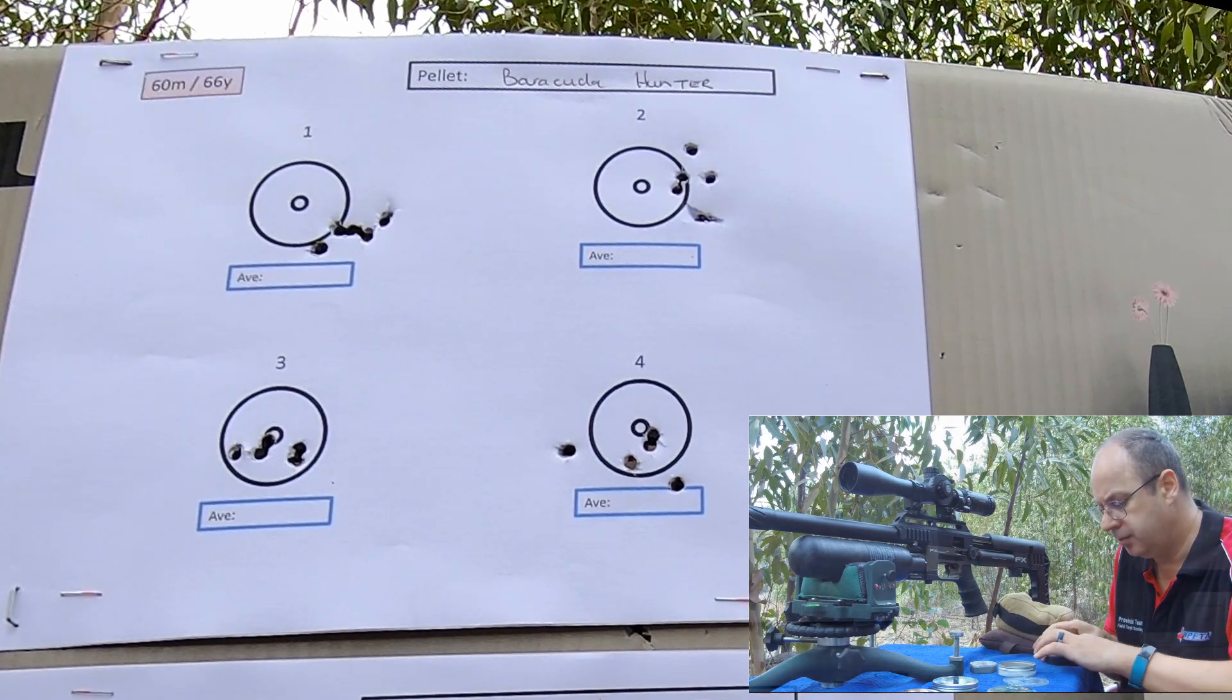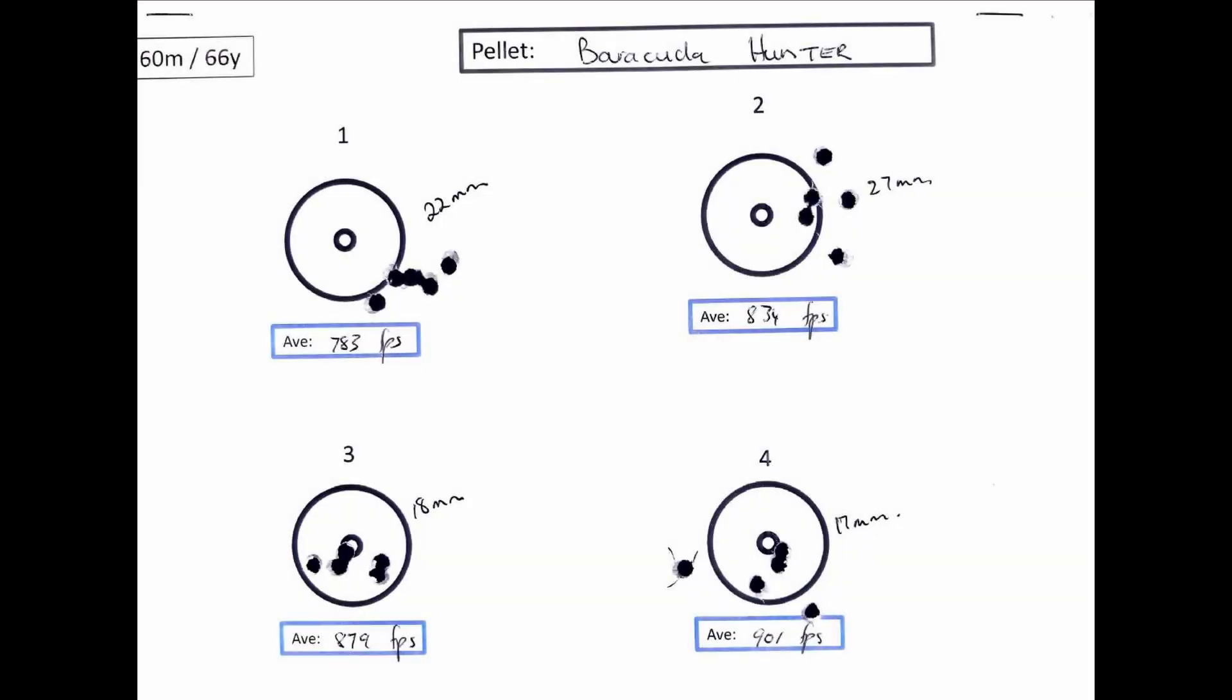Hunters, quite a decent pellet. I was actually expecting a little bit better from the Hunters than what they did in this scenario. If I look at those groupings, 17 millimeters, 18 millimeters, that's around about the same as the Terminator. So if I've got the choice between the Hunter and the Terminator, hmm, that's a difficult one.